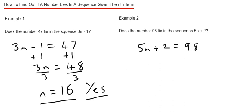That will give us 5n equals 96, and then divide by 5. So if we do 96 divided by 5, that will give us 19.2.